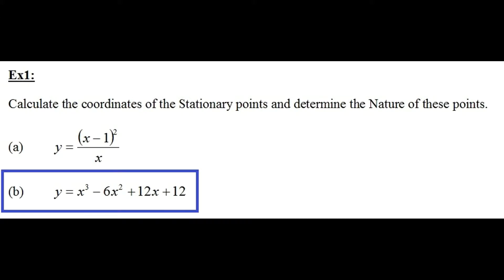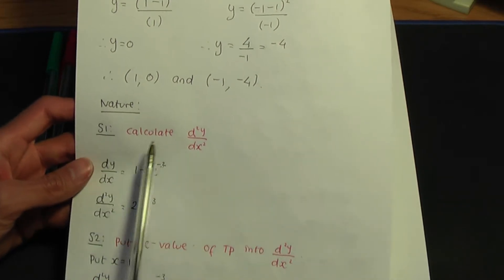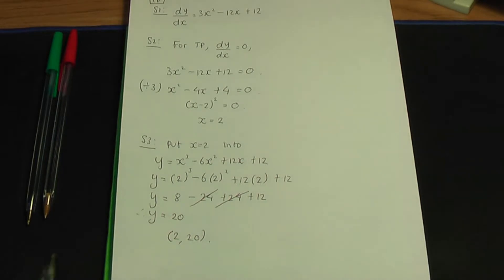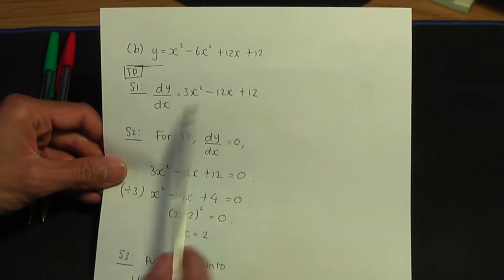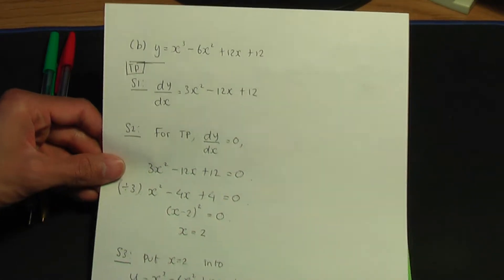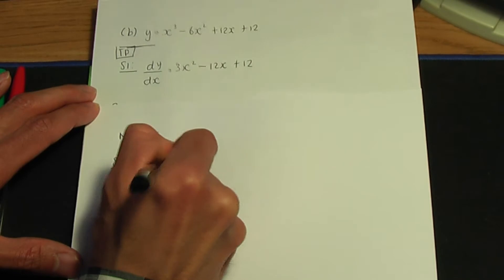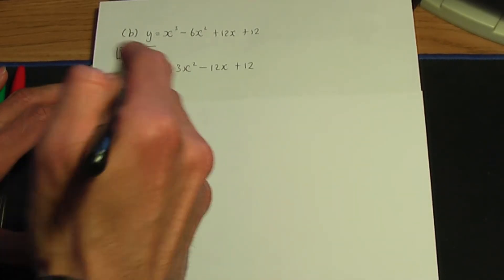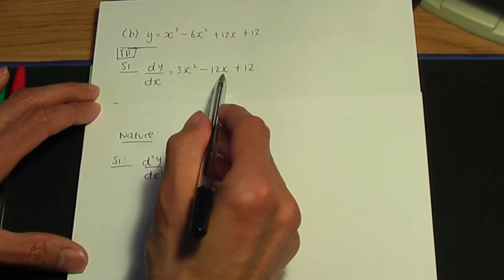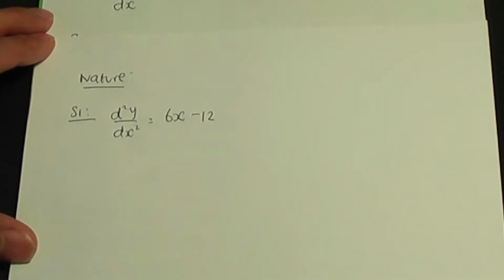We also need to determine the nature of this point. Referring to the previous example, for the nature, step number one is to calculate d²y over dx squared. We have dy over dx as 3x squared minus 12x plus 12. Differentiating again: 3x squared differentiates to 6x, minus 12x differentiates to minus 12, and the constant differentiates to 0. So d²y over dx squared equals 6x minus 12.